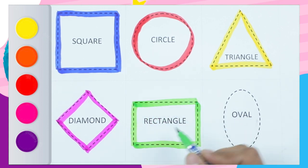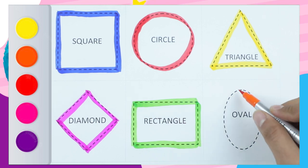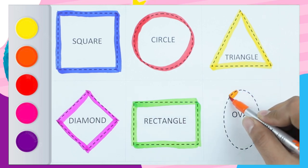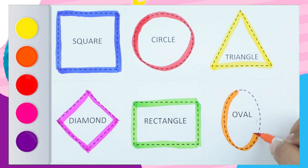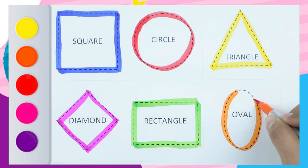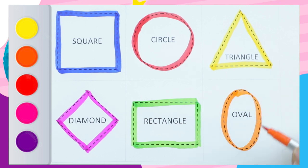Two sleeping lines, two standing lines. It's a rectangle — green color rectangle. Orange color oval. It's an oval — orange color oval shape.